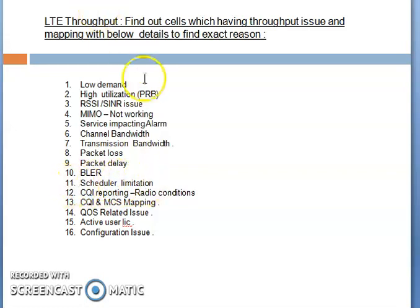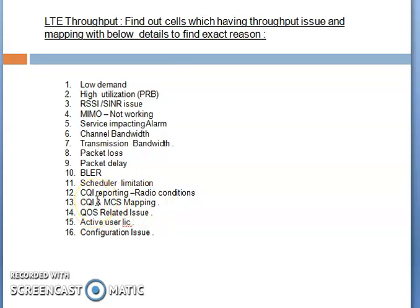The tenth factor is CQI reporting on radio conditions. Check RSRP, RSRQ, SINR, and the CQI reporting time interval — both periodic and aperiodic CQI reporting should be enabled. Also check CQI to MCS mapping: if you are getting good CQI but not getting good MCS, verify that the CQI-MCS mapping correspondence is correct. Additionally, check QoS-related issues — there should be proper mapping between radio, transmission, IP, and core QoS definitions across all domains; any mismatch can result in poor throughput on the particular site or cell.